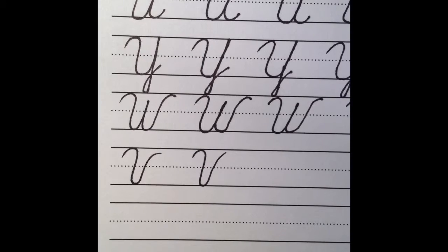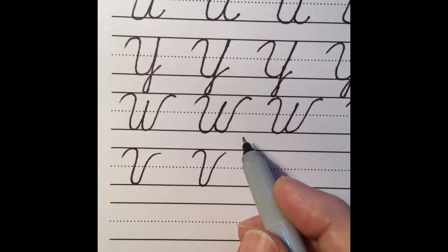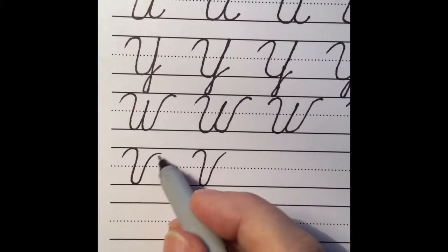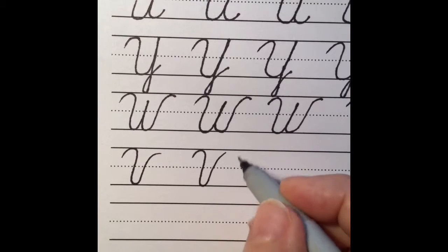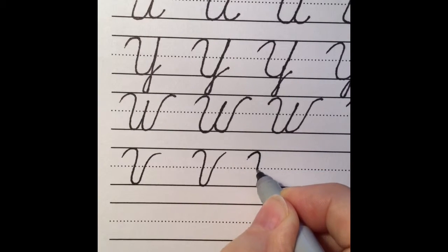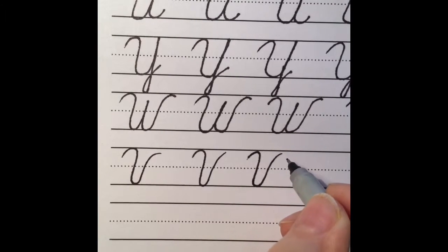When making a capital V, it begins very much the same way as a capital W. It doesn't end with quite as much of a curve on its ending. So we have the over curve down to the under curve and just a slight curve at the ending.